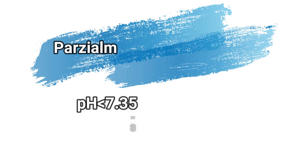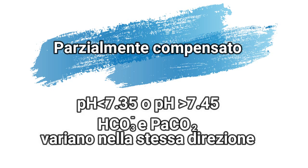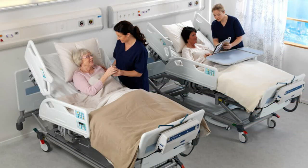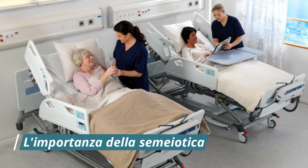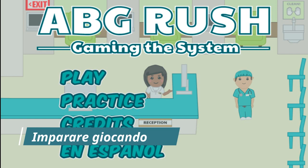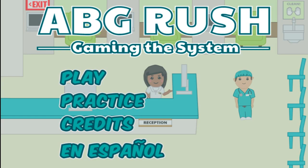Quando il pH è invece anormale e i valori di HCO3- e PaCO2 variano nella stessa direzione, lo squilibrio acido-base è parzialmente compensato. A volte possono coesistere alterazioni sia metaboliche sia respiratorie: in questo caso il pH è normale e i valori di bicarbonati e della pressione parziale di anidride carbonica variano in direzioni opposte. In ogni caso è fondamentale confrontare i risultati dell'emogasanalisi arteriosa con la semiotica della persona assistita. Un interessante strumento per esercitarsi nell'interpretazione è il videogioco ABG Rush, il cui link al download è in descrizione.